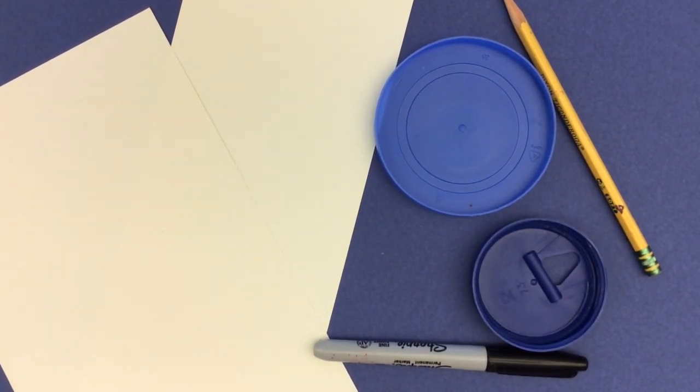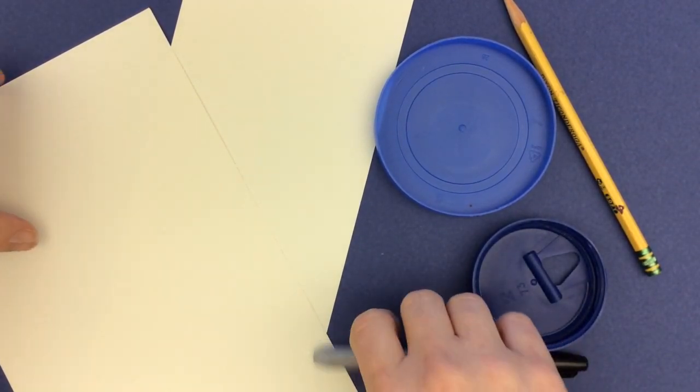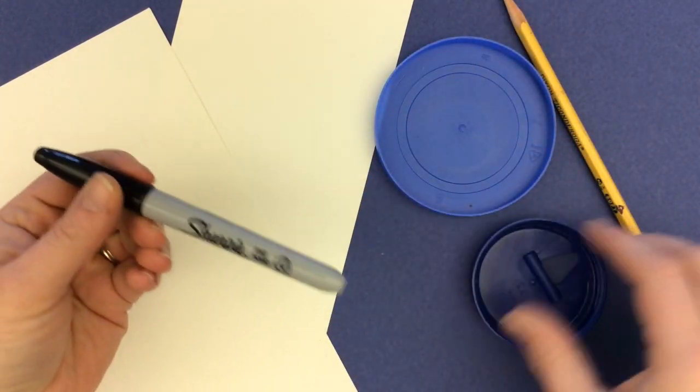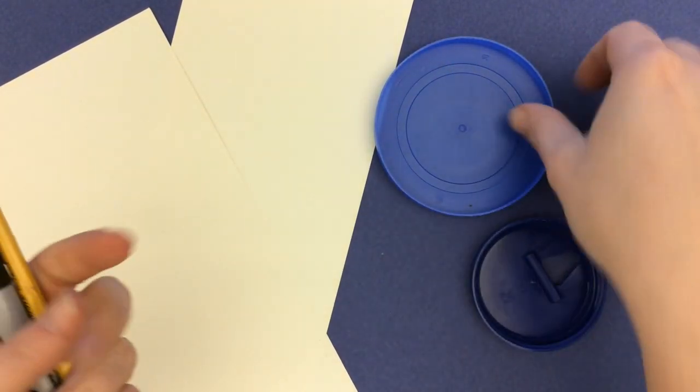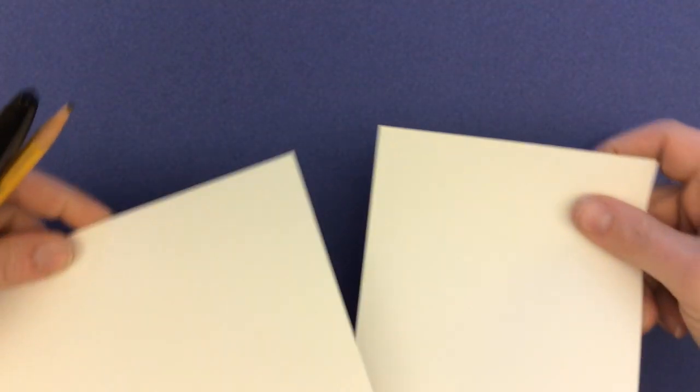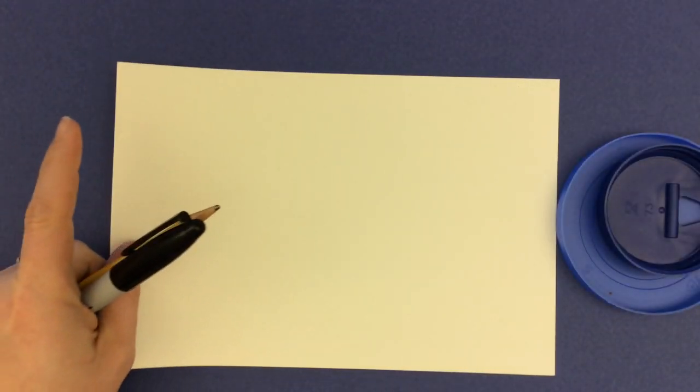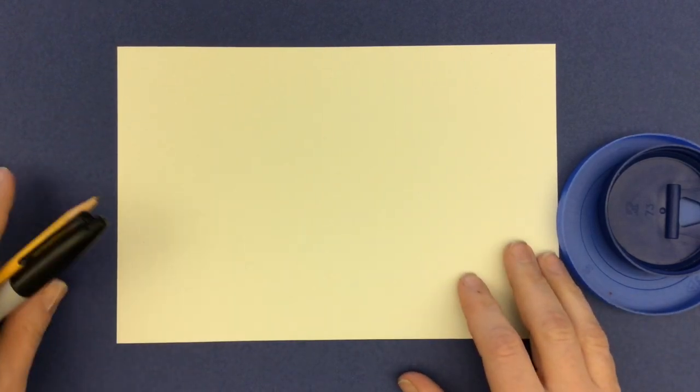For the first step of our Macintosh inspired artworks, we need a couple of tools. We're going to need a pencil, a sharpie marker, and then some tracers. And we'll need two pieces of paper. One is our practice paper and one is going to be our final copy.